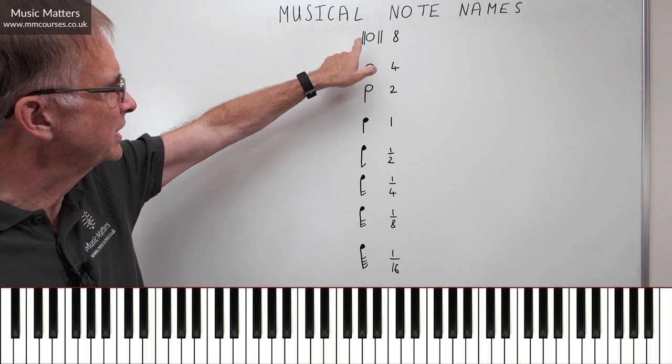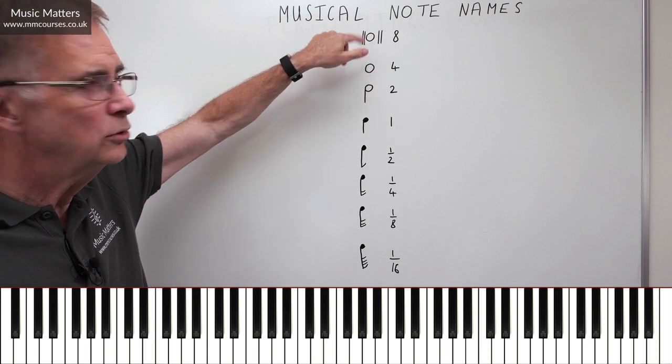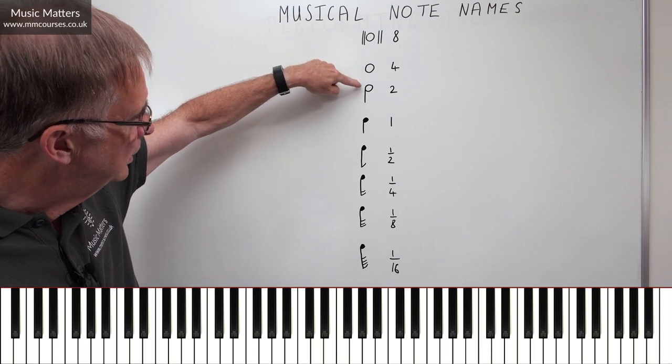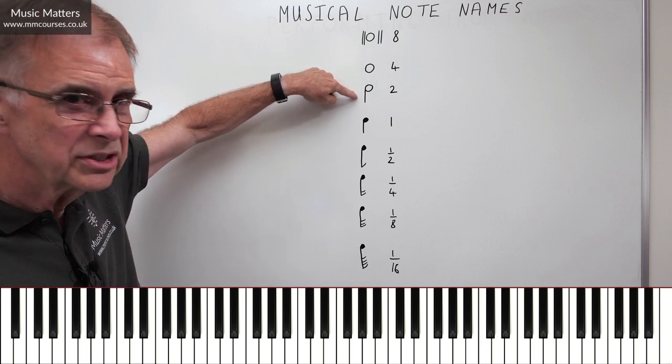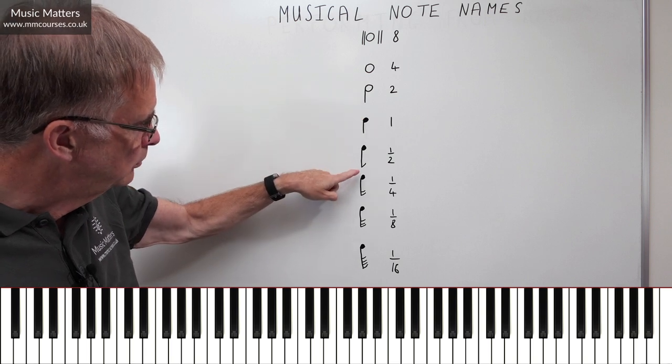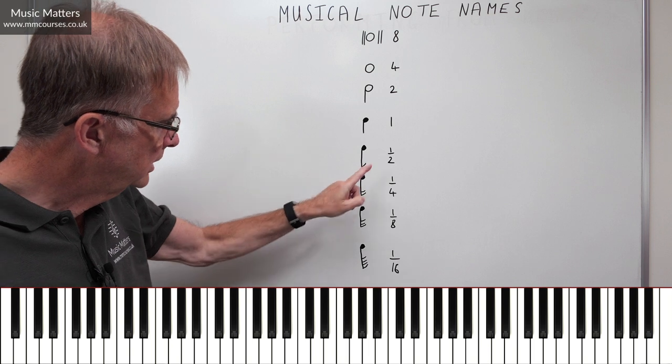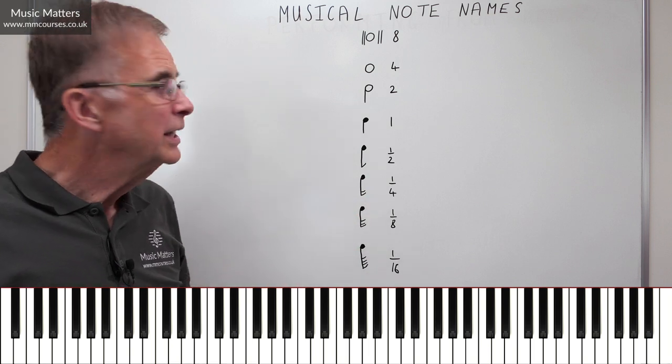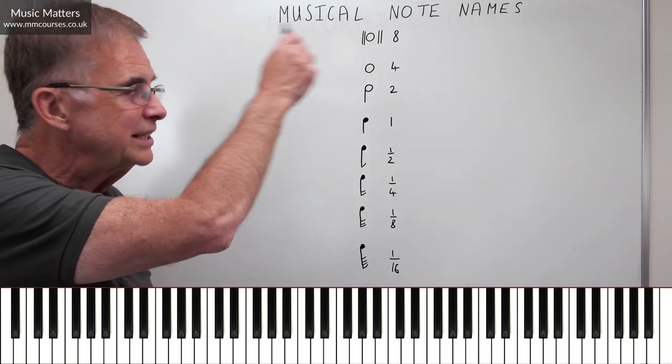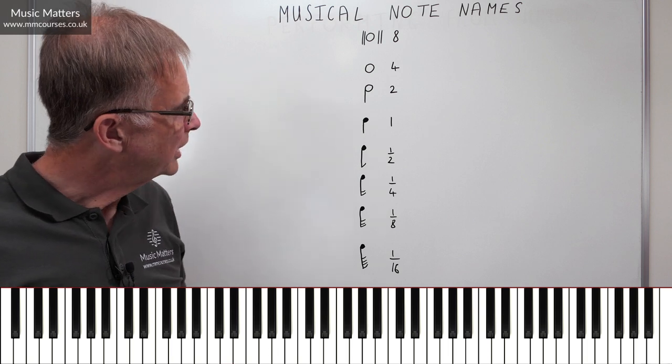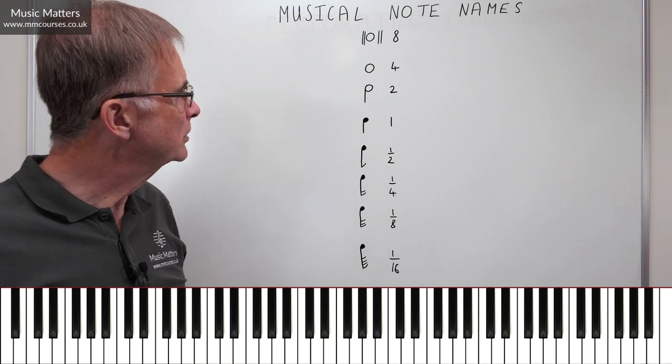So there's a system behind all this. We start off with this funny thing, a round note with these two lines either side, and then we get rid of the lines. Once we have that, we put a stick on it, what we call a stem. Then we have that and we color it in. Then we have that and we put one hook on it, then we add a second hook and a third hook and a fourth hook. So this is the basic system of rhythm that we use. And now we're going to talk about the names that go with them.